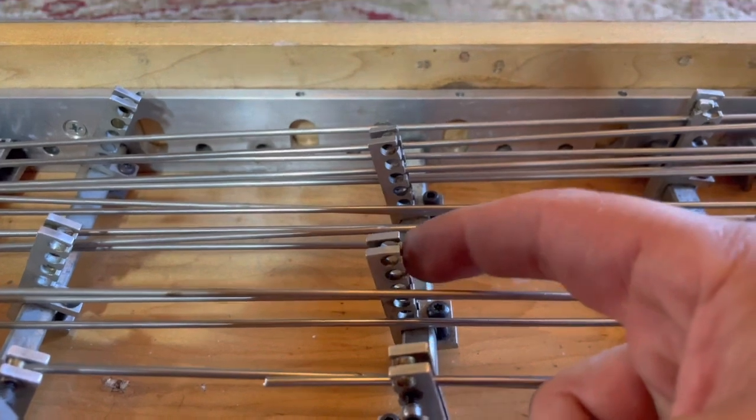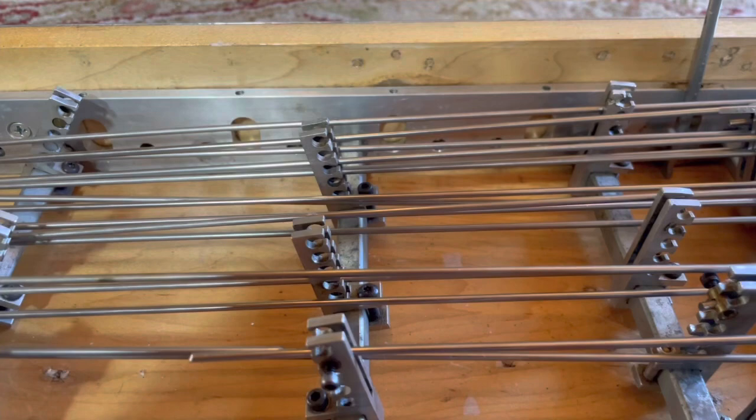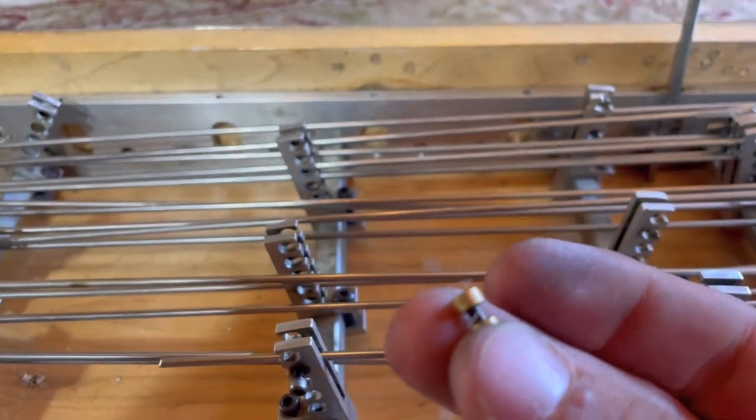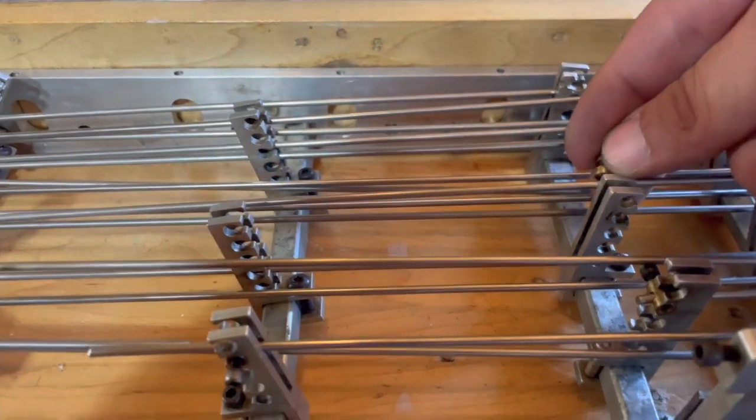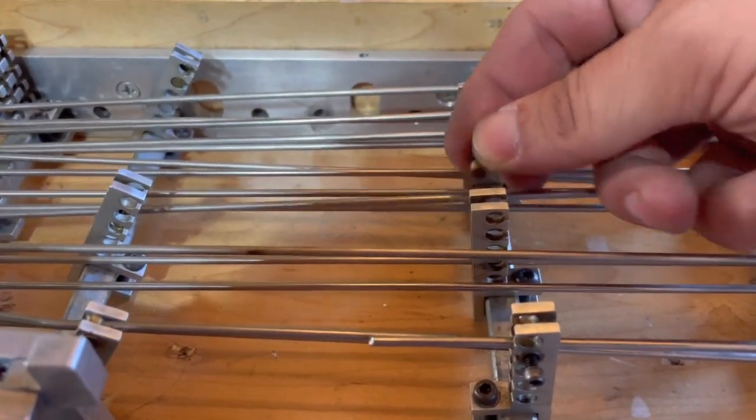So to add a rod, you take this little barrel. Let me get it in there. You're gonna slide it through the hole.